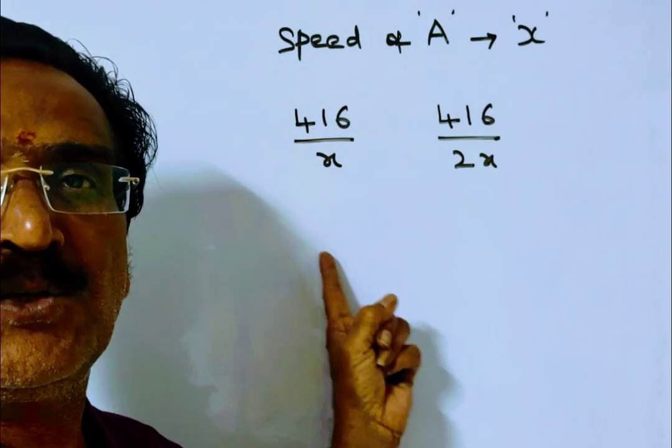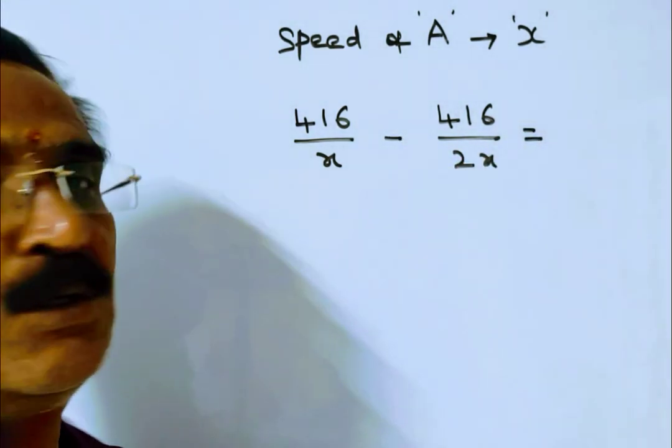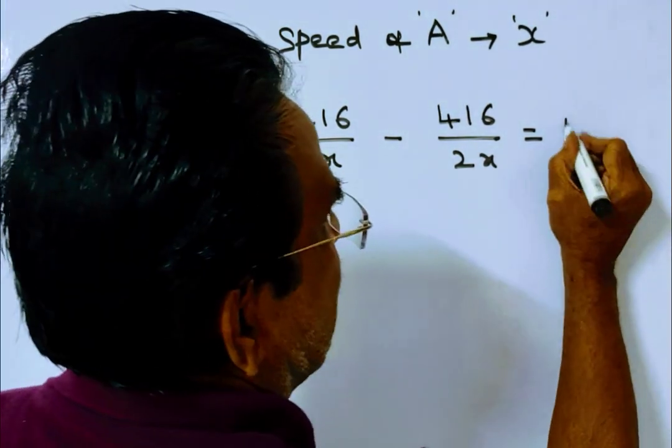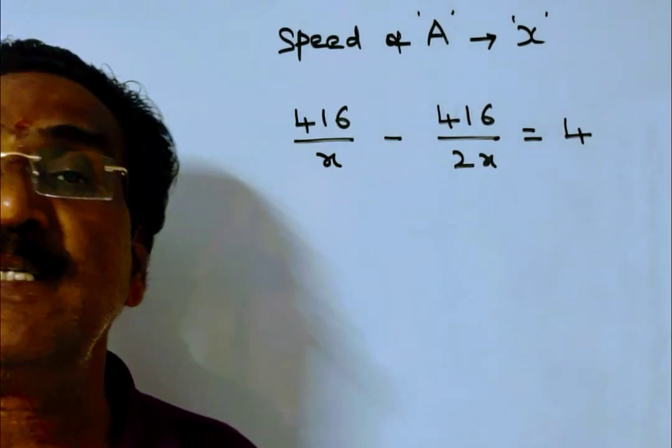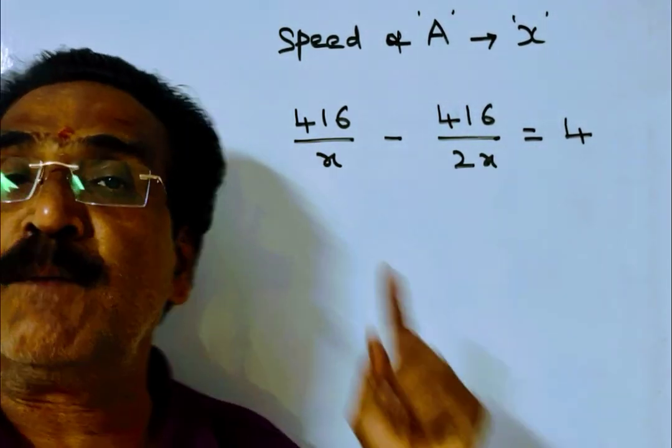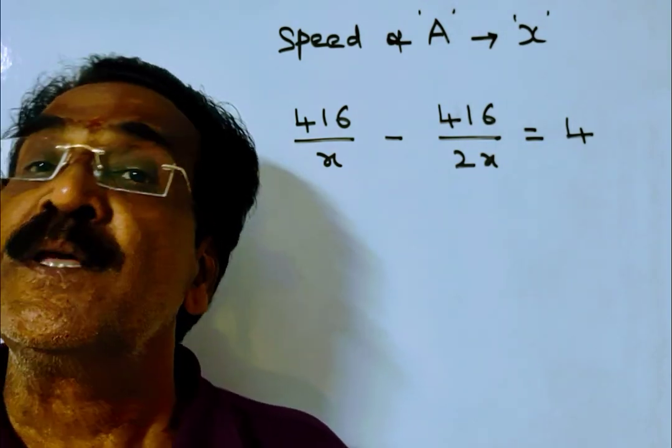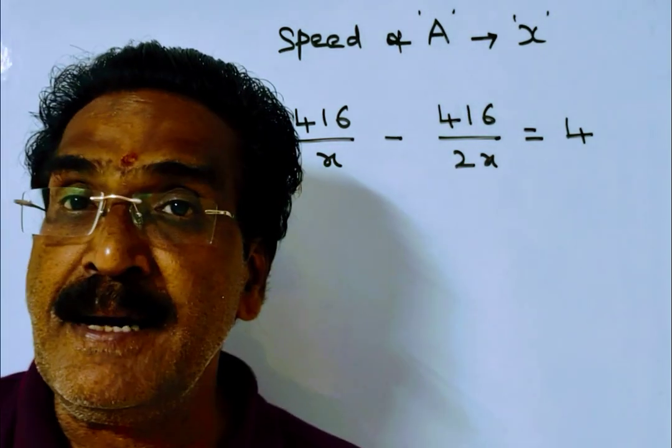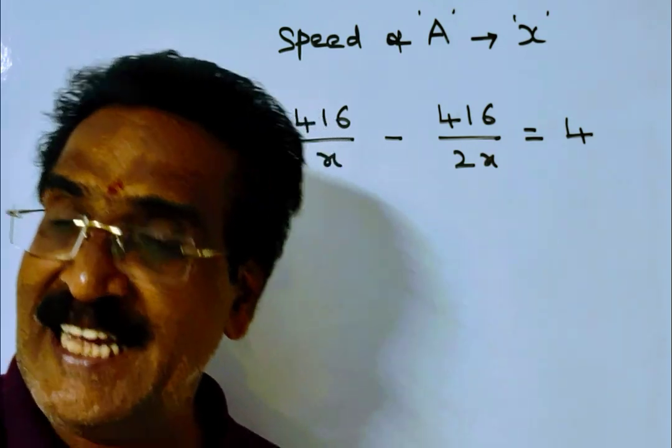Friends, the difference between these two timings is 2 by 3 plus 1 by 3, which equals 4 hours. The difference between these two timings is 4 hours. Because when the speed is normal, at normal speed, train A takes 2 by 3 hours more than train B. When the speed is doubled, it takes 1 by 3 hours less than train B.